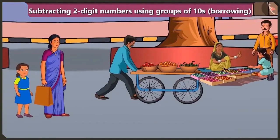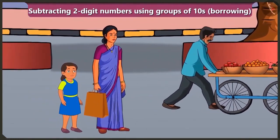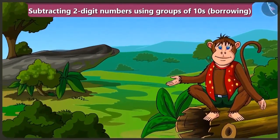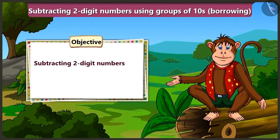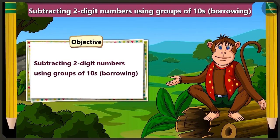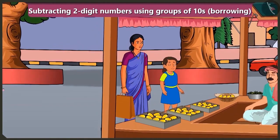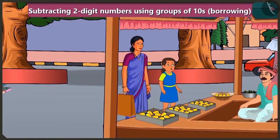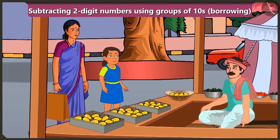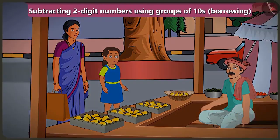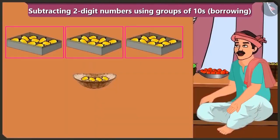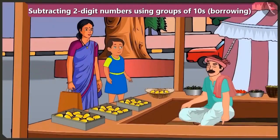Children, Bubbly has gone to the market with her mother today. While visiting the market, we will use groups of tens to learn subtraction of two-digit numbers with the help of borrowing. Mummy, look, we can get mangoes from there. Brother, how many mangoes are there in one box? There are 10 mangoes in one box. I have 3 tens and 4 ones — means 34 mangoes. How many mangoes do you want? I want 8 mangoes. The mango seller has only 4 loose mangoes, so how will he give us 8 mangoes?